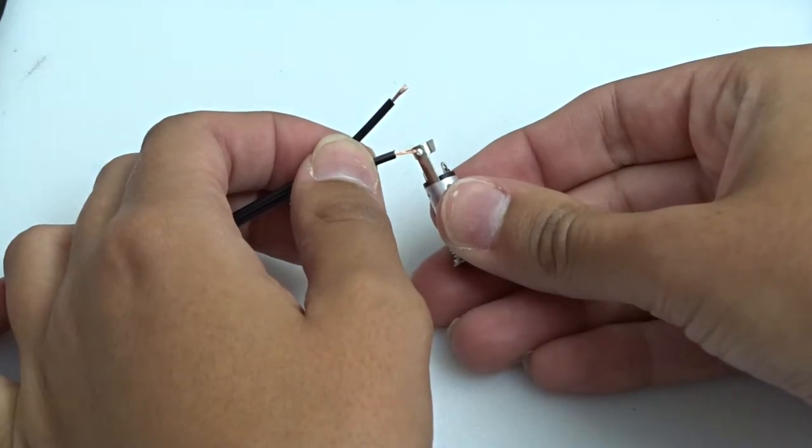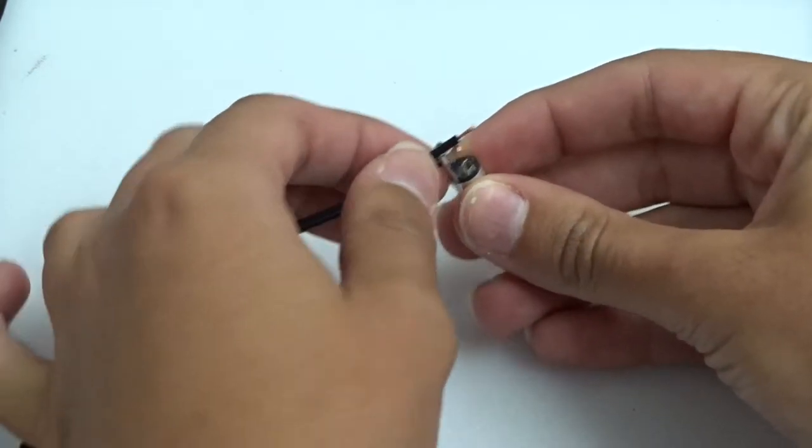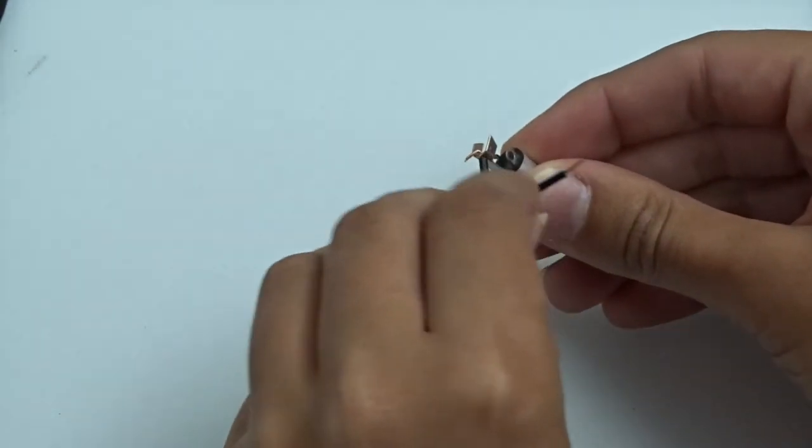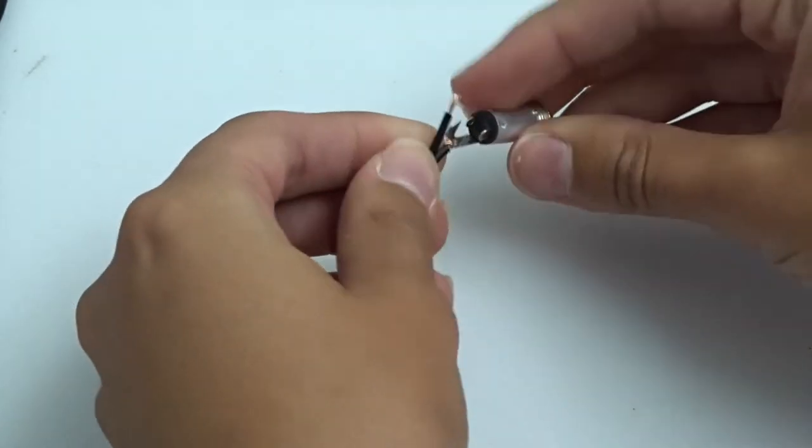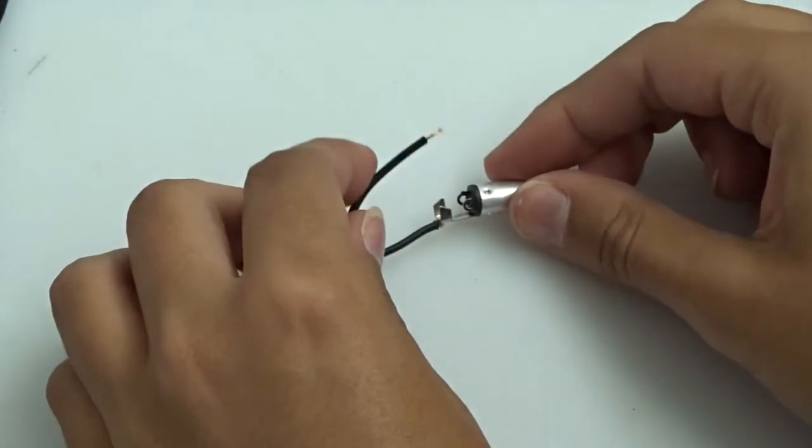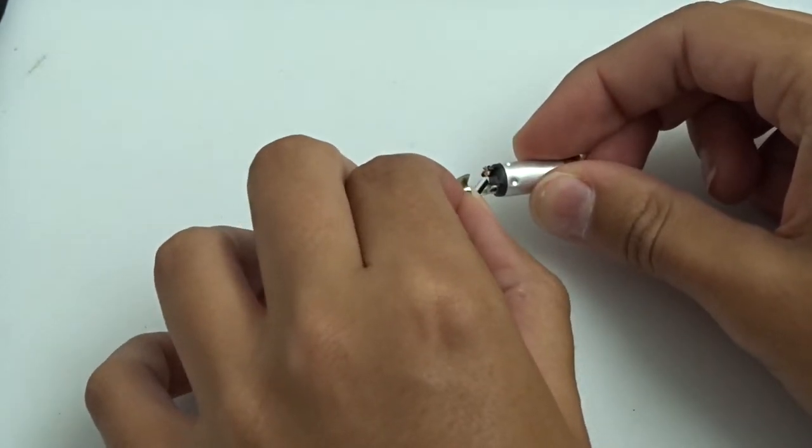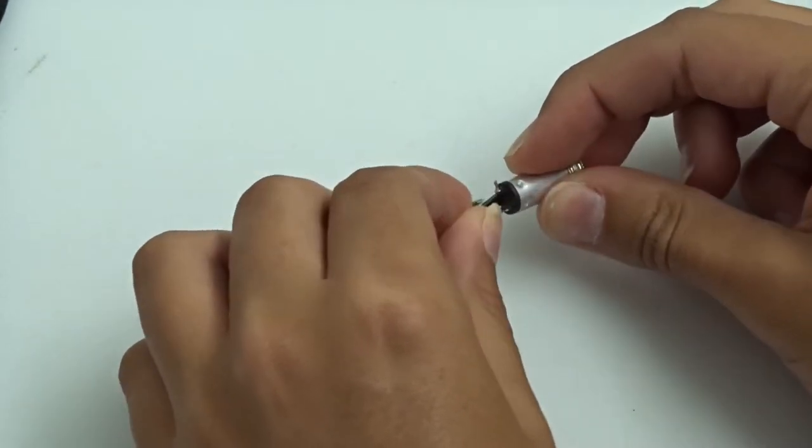Thread the shorter strand of wire through the tall post and twist the wire over itself to hold it in place. Repeat this with the other strand of wire and one of the short posts.